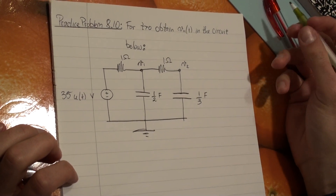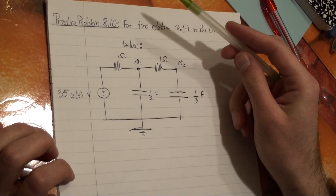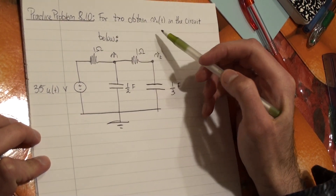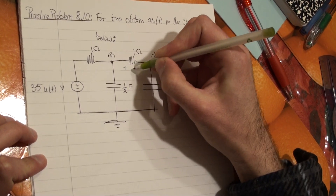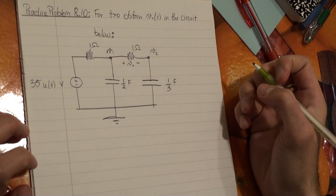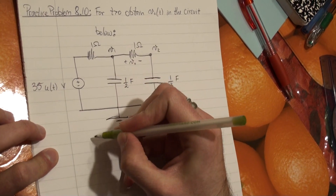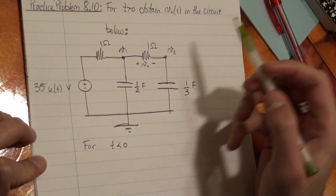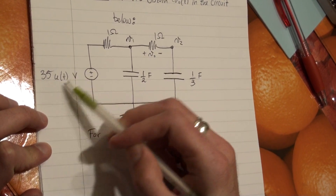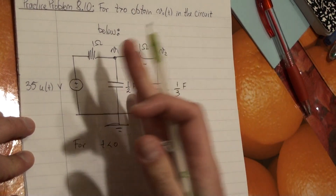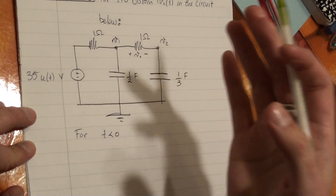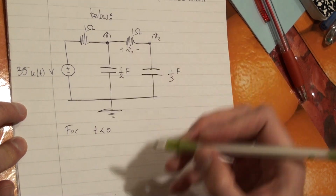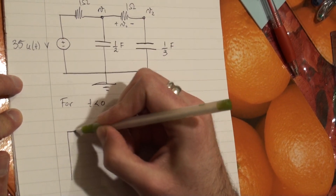This is going to be a solution for practice problem 8.10 from Fundamentals of Electric Circuits by Alexander and Sadiq. We have here a second-order circuit and the problem says for T greater than 0 obtain V0, which is a specific voltage in the circuit. We start by understanding what happens before time equals 0, because our voltage source is 35 times a step function. The step function equals 1 for T≥0 and 0 for T less than 0, leaving us with a short circuit of 0 voltage.